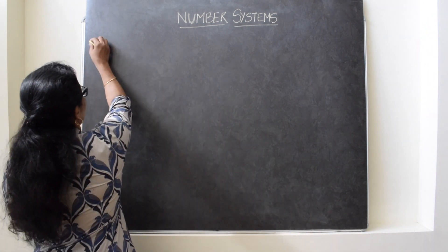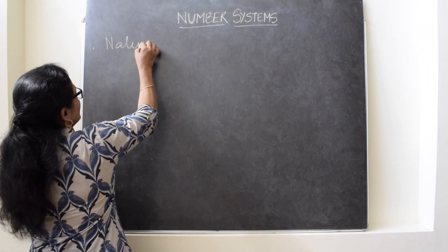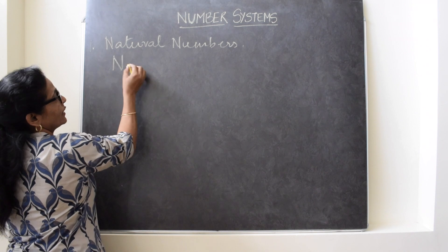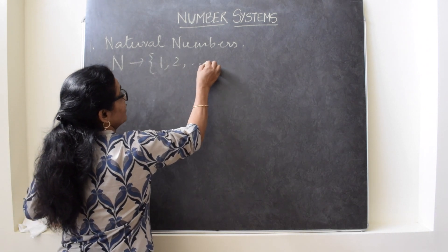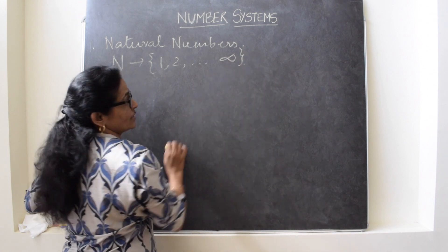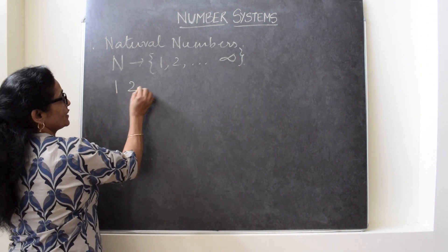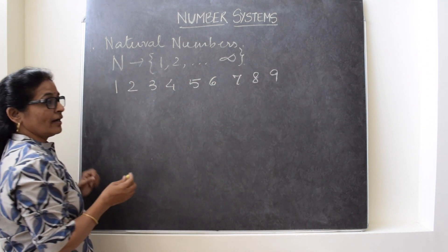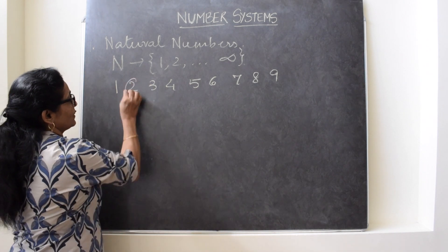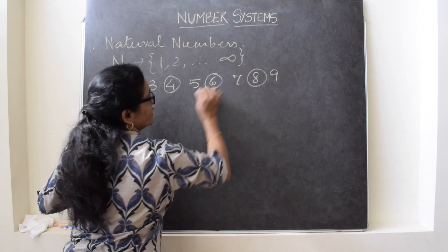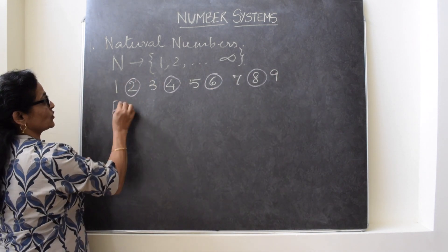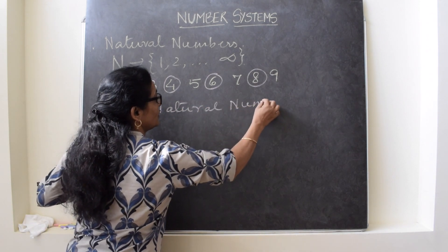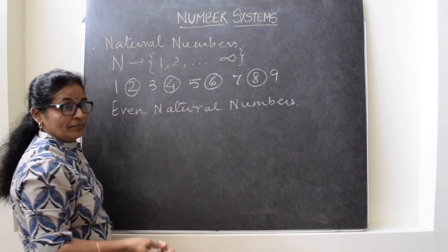The first type of numbers are natural numbers. Natural numbers start with 1 and they are represented by capital N. These numbers are infinite — they go up to infinity. If we write these numbers 1, 2, 3, 4, 5, 6, 7, 8, 9 and highlight some numbers, for example 2, 4, 6, 8, these are called even natural numbers. Even natural numbers are the numbers which are divisible by 2, or we can say they are multiples of 2.